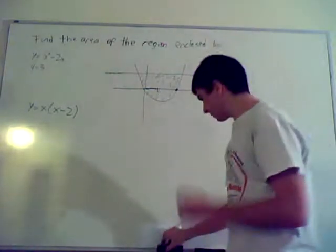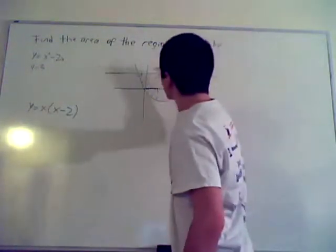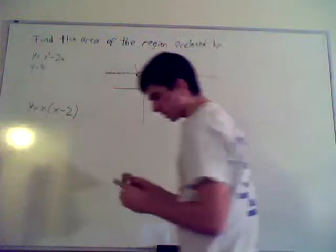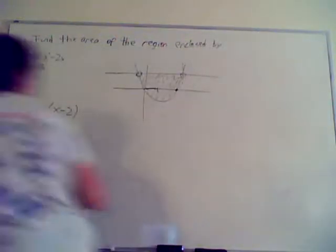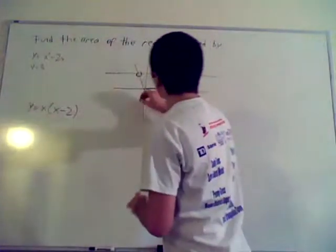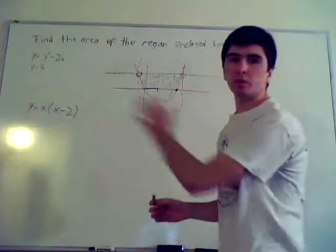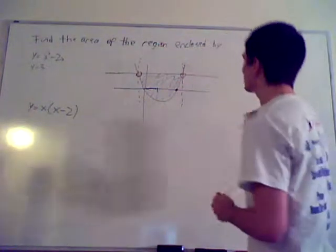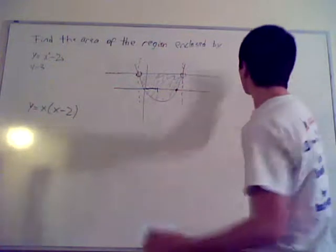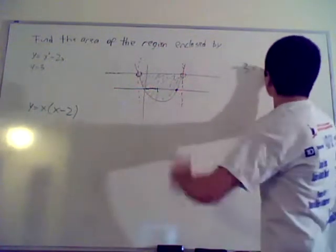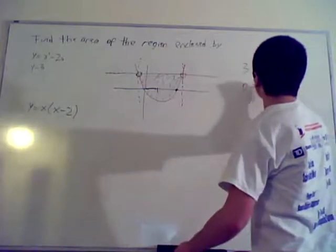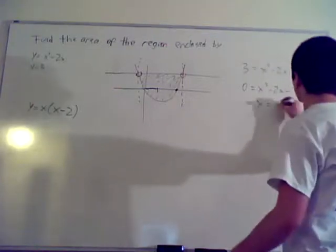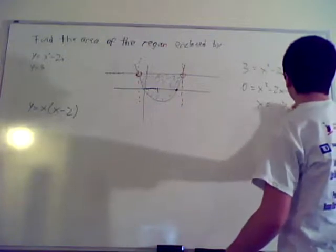So this parabola goes like this, and the problem is asking for the total enclosed area right here. How do you do that? Well, you first find where these two curves intersect, because those two intersections define the bounds. By finding where they intersect, you find the enclosed area and the two points you want to integrate between. So you set them equal to each other — that's how you find solutions for a system. So 3 equals x squared minus 2x, which gives 0 equals x squared minus 2x minus 3, which means x equals 3 or x equals negative 1.